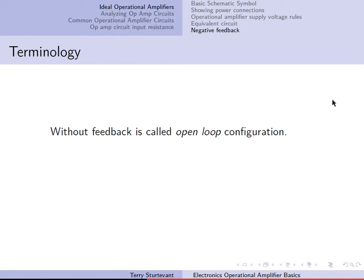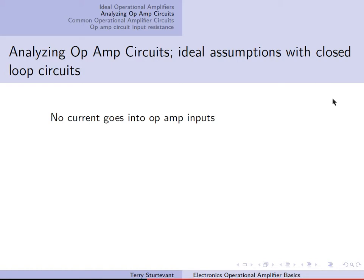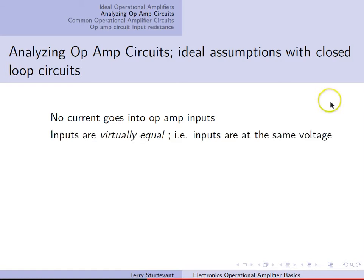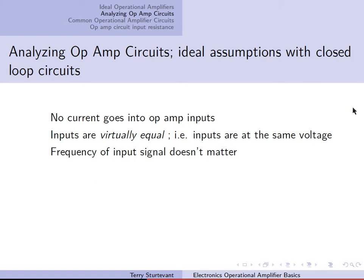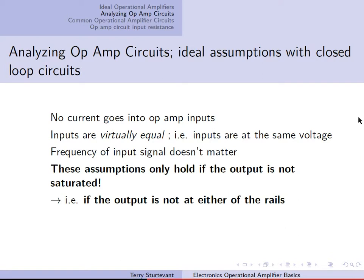Without feedback, an op-amp circuit is called the open-loop configuration. With feedback, it's called the closed-loop configuration. The gain without feedback is called the open-loop gain, and the gain with feedback is called the closed-loop gain. To analyze op-amp circuits with feedback, three assumptions are made: no current goes into the op-amp inputs; the inputs are virtually equal, meaning at the same voltage; and the frequency of the input signal doesn't matter. These assumptions only hold if the output is not saturated — once the output reaches saturation, those assumptions no longer hold.